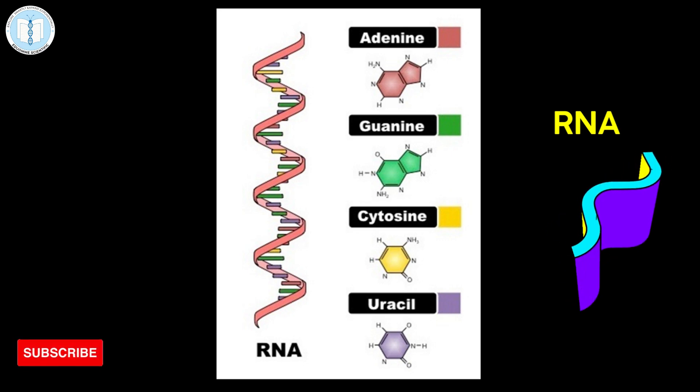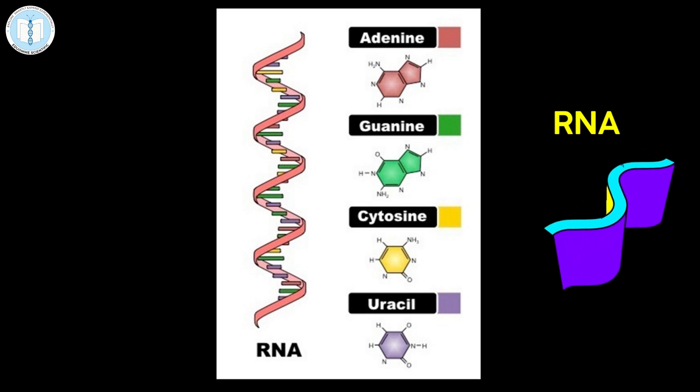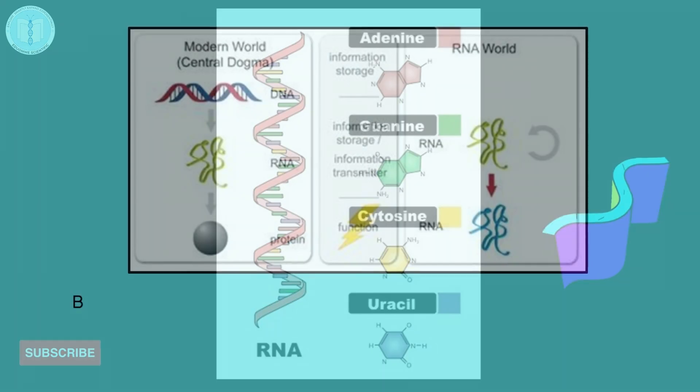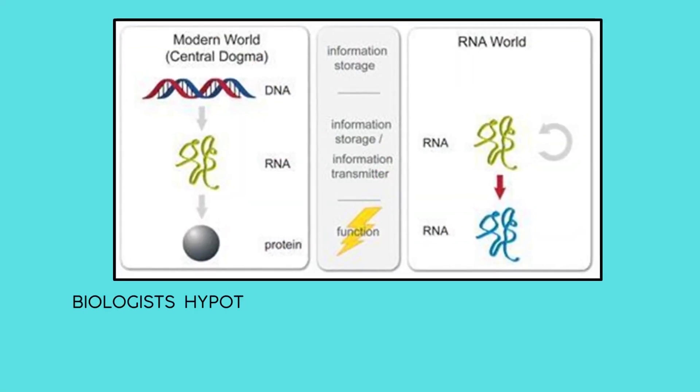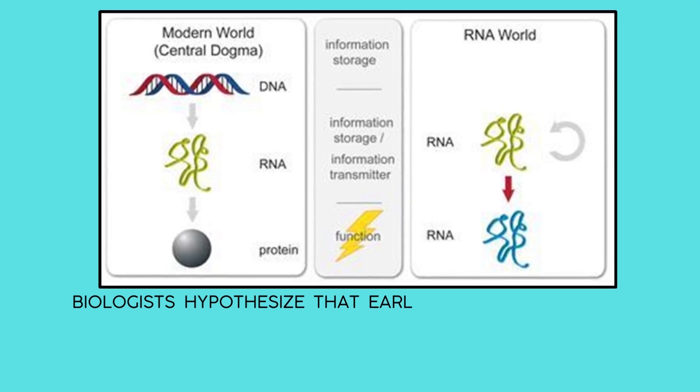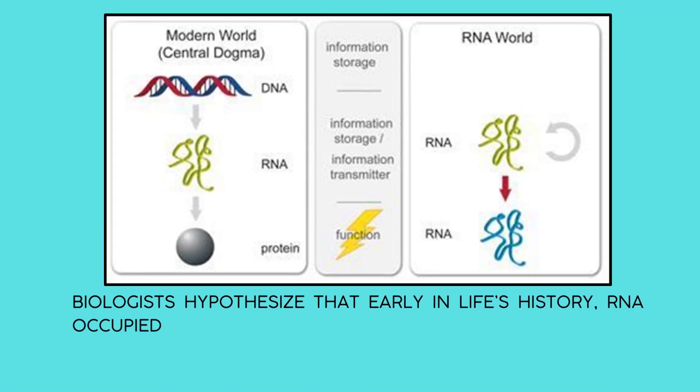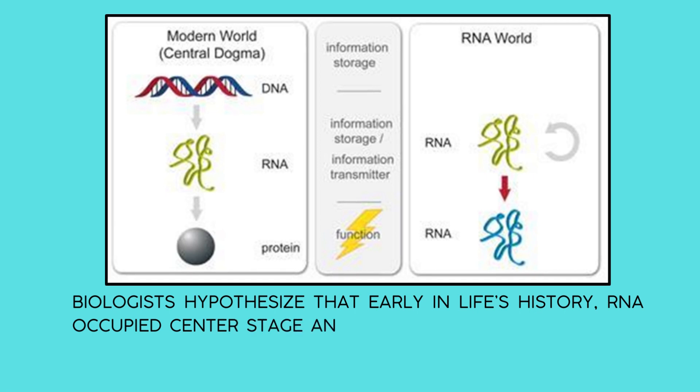Each sugar has one of the four bases: adenine, uracil, cytosine or guanine attached to it. Cells contain a variety of RNA including transfer RNA, messenger RNA and ribosomal RNA. In addition, some RNAs are involved in regulating gene expression. Certain viruses use RNA as their genomic material.